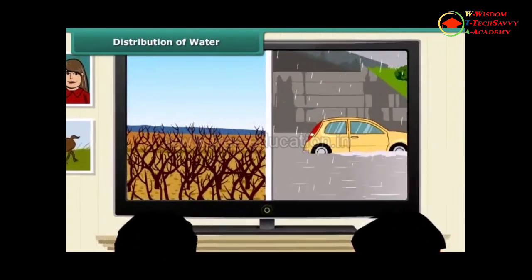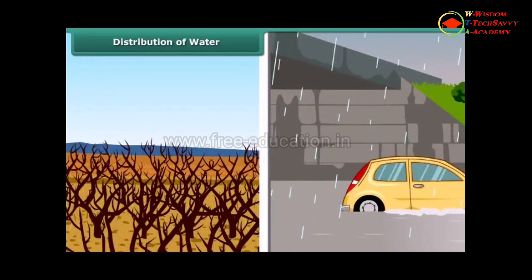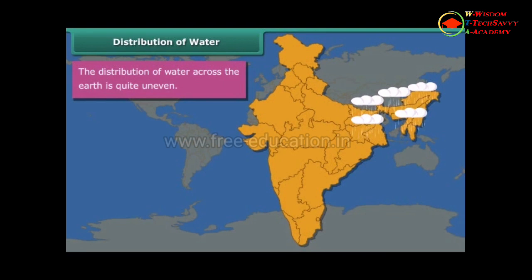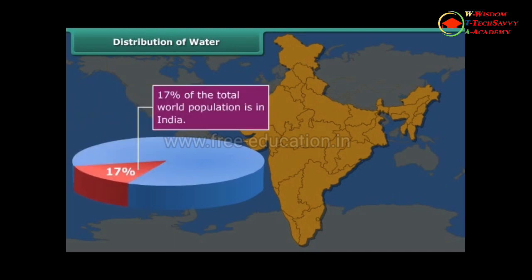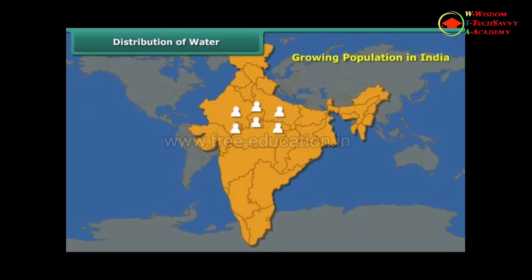Floods are reported in one part of the world; in another part, there is a severe drought. The reason for this strange coexistence is the uneven distribution of water across the countries of the world. Even within a country, water resources are unequally distributed — while there are deserts that receive scanty rainfall, there are humid regions that receive bountiful rainfall. 17% of the total world population is in India, but India has only 4% of the world's fresh water resources. As a result, India is facing acute water shortage, and the situation is likely to worsen with population growing at a fast pace.